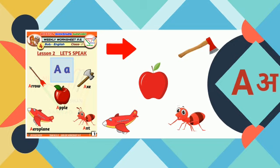Now, let us recall the sound of A. A is for arrow, axe, apple, aeroplane, and ant.